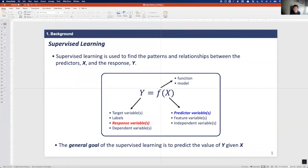Y here is also called the target variable, the label, or the dependent variable. And x is also called the feature variable or independent variable.